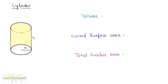What will be the volume? The volume will be the area of the base times the height. The area of the base will be πr², and we multiply that by the height h. So πr²h is the standard formula for calculating the volume of a cylinder.